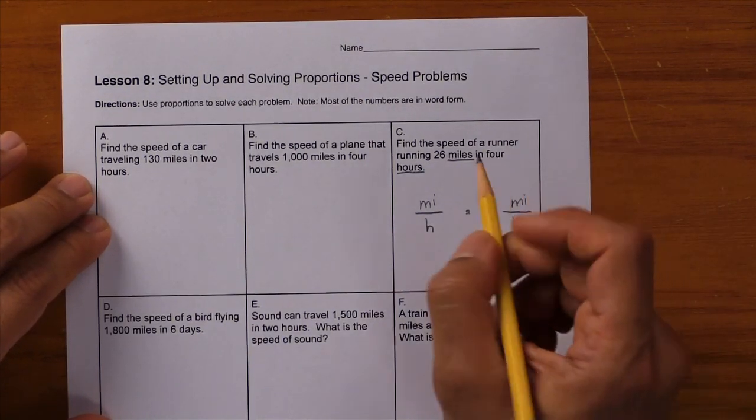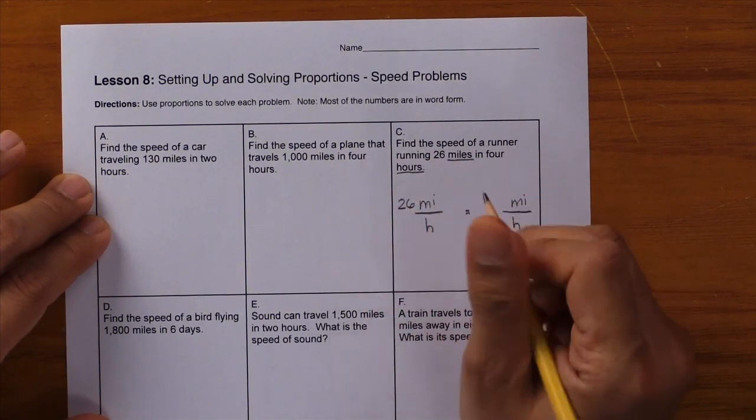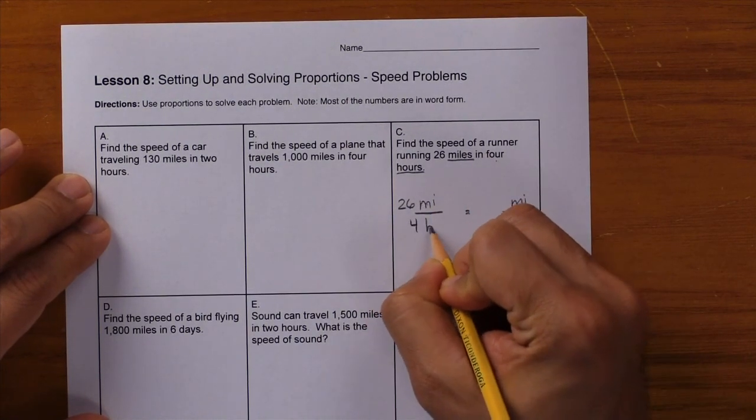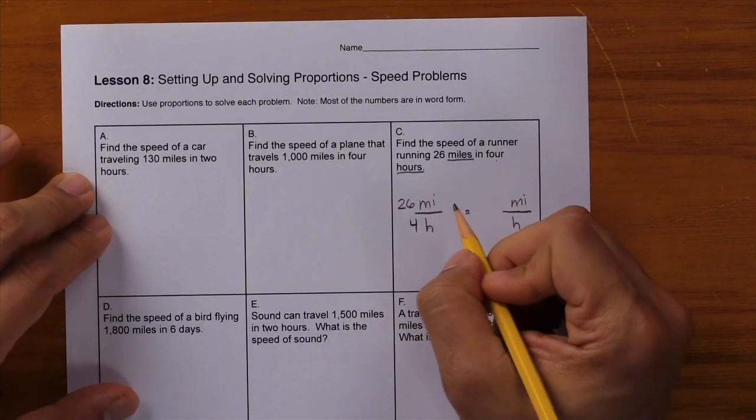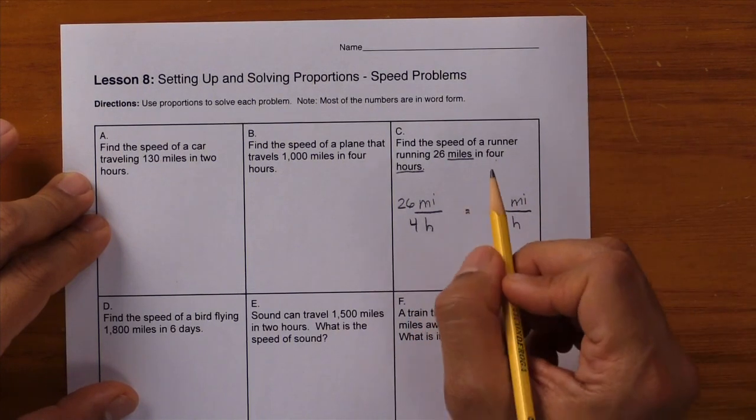26 miles—here's 26 miles. In four hours—here's four hours. Now remember, we need three values but we only have two so far. So where do we get that missing value? Remember, when they're asking for speed...